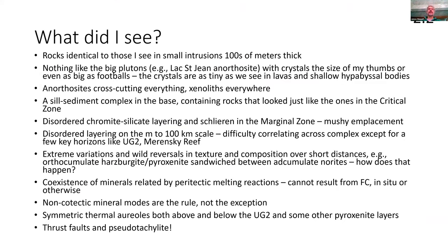When I got to the Bushveld, I saw things I didn't really expect, given my expectations of a fractional crystallization-dominated system in a very large, slowly cooling intrusion. The rocks were much like the ones I was used to seeing in much smaller intrusions — just a few hundred meters thick — small grain sizes, poikilitic textures, nothing at all like the big plutons like the Lac-Saint-Jean anorthosite with crystals as big as my thumb or even as big as footballs. The crystals are small — they look like the things we find in rapidly cooled intrusions. To my amazement, I saw anorthosites everywhere, cross-cutting everything else. I was quite surprised. In the Cameron section, everywhere I looked, I saw anorthosite where I didn't expect to see it, with clearly discordant relationships.